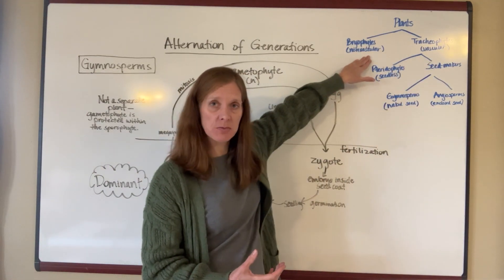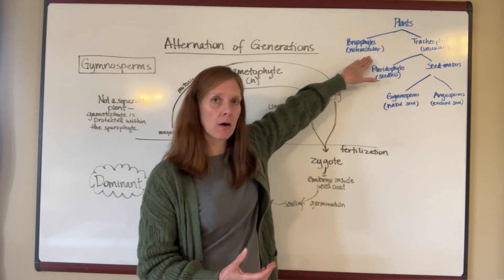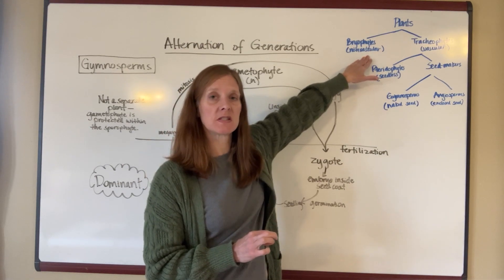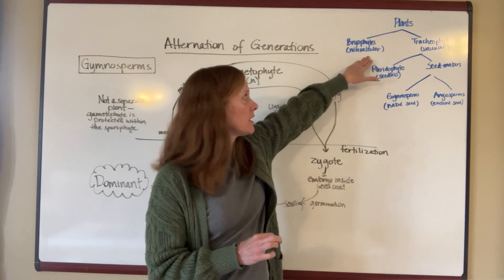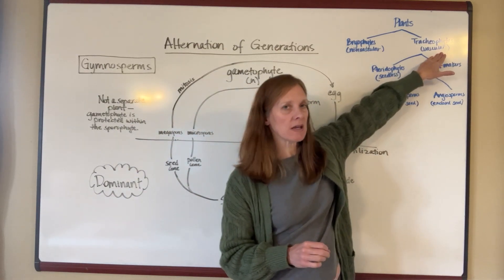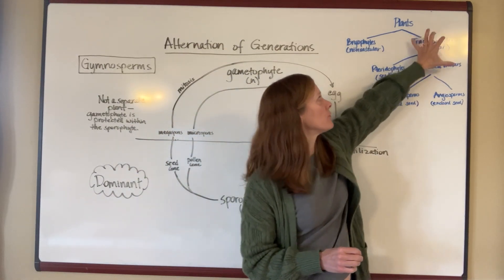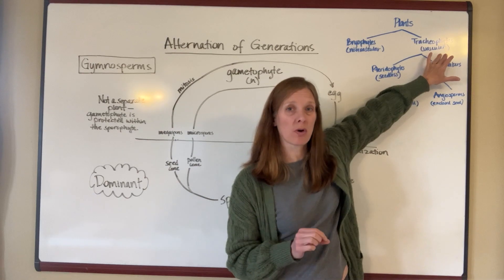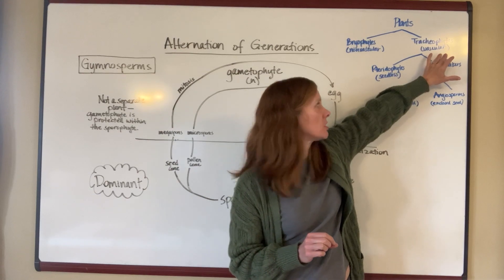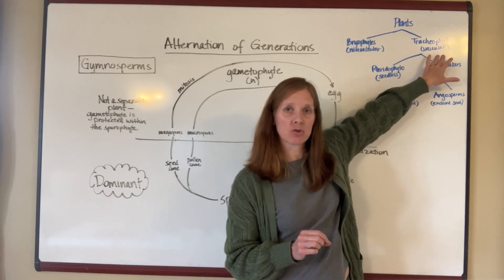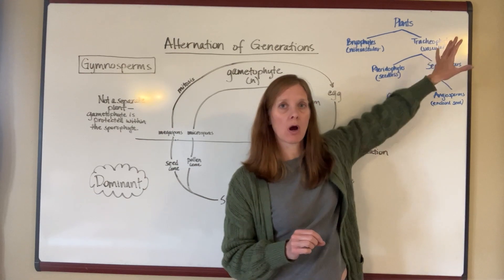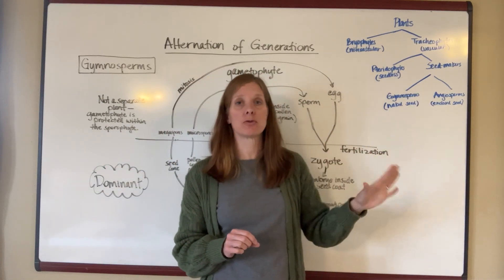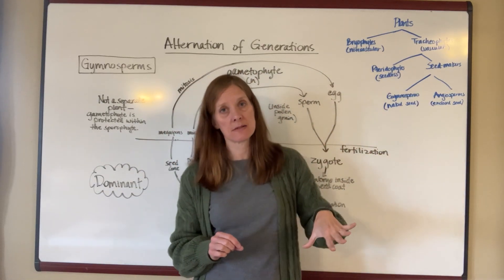So we talked about the mosses. We talked about how their dominant generation is the gametophyte generation, but once you get into the tracheophytes, everything over on this half of the diagram is a dominant sporophyte generation. The tracheophytes, which are all vascular, are going to further subdivide into those that make seeds and those that do not make seeds.